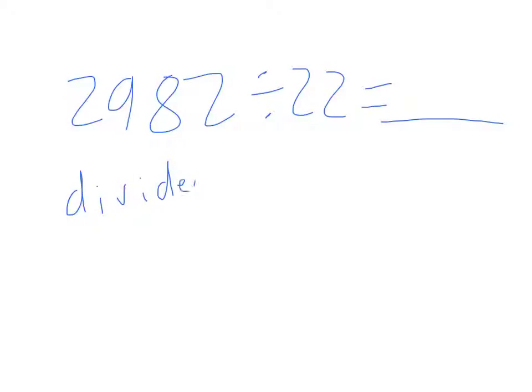Let's identify the dividend, the divisor, and the quotient. This is how our problem is going to look. The dividend is 2,982. A way to remember that is dividend, and then this is the divisor.